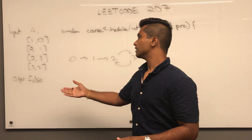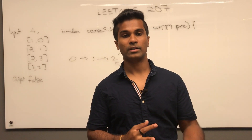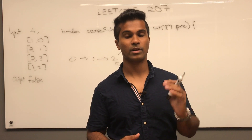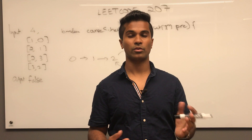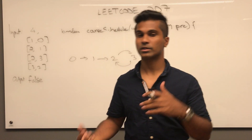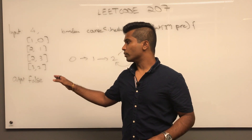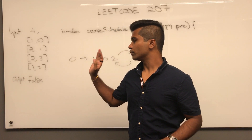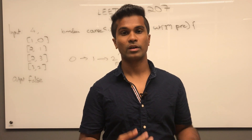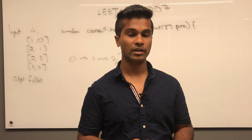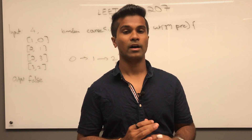Essentially this question boils down to: is there a cycle in this directed graph? If there is a cycle, we cannot complete it and we return false. The approach I'm going to use is a BFS-based topological sort approach — we don't actually need the full topological ordering, we just need to return true or false.